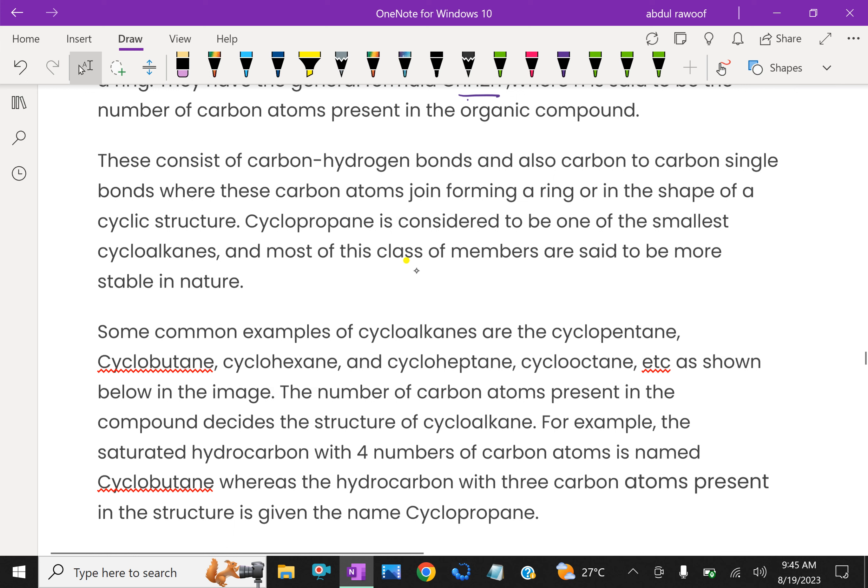Cyclopropane, for example, is considered to be one of the smallest cycloalkanes, and most of this class of members are said to be more stable in nature.